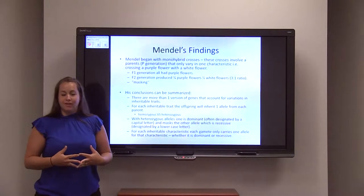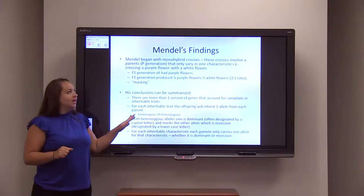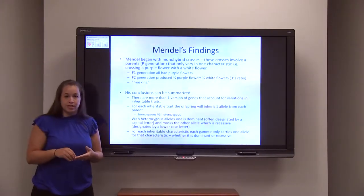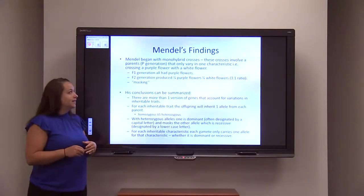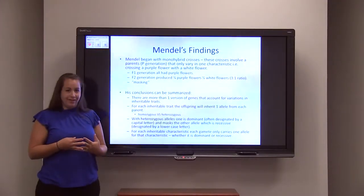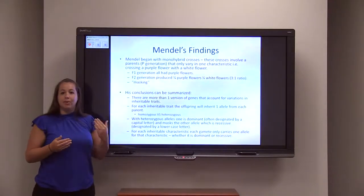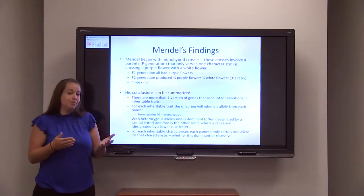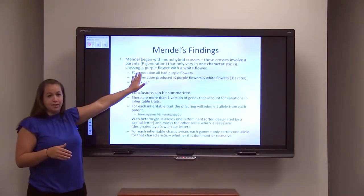When Gregor Mendel started off with his genetic experiments, he began with what's known as a monohybrid cross. A monohybrid cross involves a parent generation that are the same except for one characteristic. For example, crossing purple flowers with white flowers — the only thing they differ in is flower color.